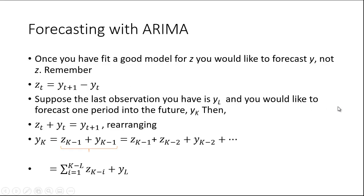Once you fit a good model for Z, you want to forecast Y, not Z. Remember, you've estimated the model for Z but you want forecasts for Y. Recall that Z_T equals Y_{T+1} minus Y_T. So if the last observation you have is Y_L, and you'd like to forecast one period ahead — call that Y_K — then from Z_T plus Y_T equals Y_{T+1}, rearranging gives Y_K equals Z_{K-1} plus Y_{K-1}.